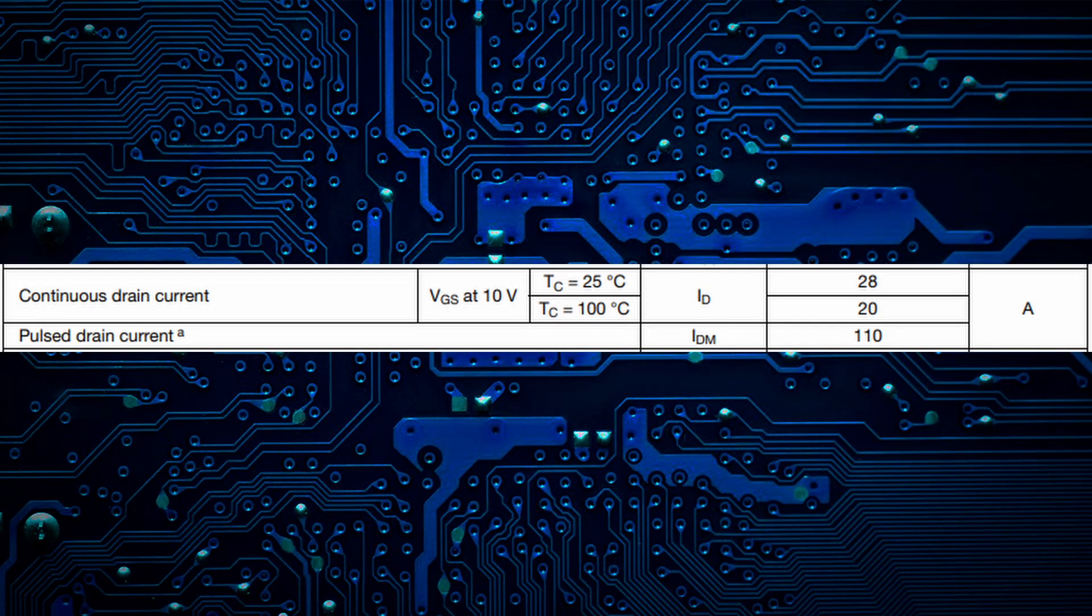Then we have the drain current, specified at 20A. Here is where we need to be extremely careful. As we can see, the datasheet indicates a value of 20A continuous at a maximum operating temperature of 100°C. Although it is not recommended to have a MOSFET operating at this temperature, it is possible.